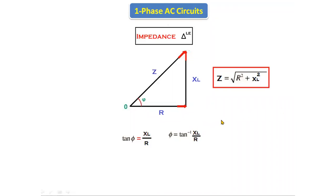In a pure resistive circuit the phase angle between voltage and current is zero degrees; in a pure inductive or pure capacitive circuit it is 90 degrees. But if it is a combination of resistor and inductor, or resistor and capacitor, we cannot state the phase angle directly — we have to find it using the formula. XL = ωL = 2πf, and using the R value, we can calculate the phase angle. So φ = tan⁻¹(XL / R) is the phase angle between voltage and current in the RL series circuit.